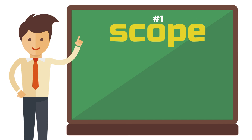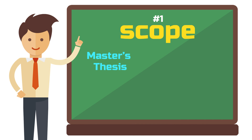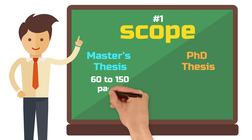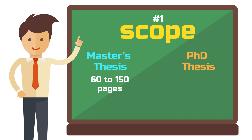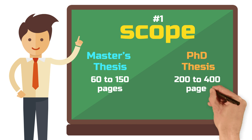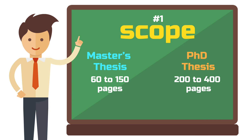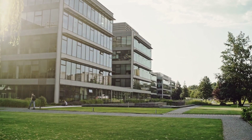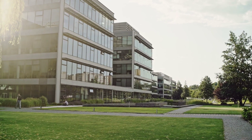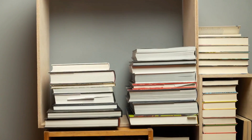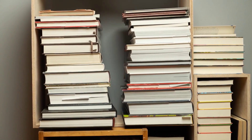Difference number one: the scope of master's and PhD thesis. The most obvious difference lies in the scope of the work. On average, a master's thesis is expected to have 60 to 150 pages of text, excluding bibliography and appendix. A PhD thesis typically ranges from 200 to 400 pages. However, there are always outliers outside of this spectrum. It all depends on the discipline you are in and the requirements of your research institution. What is certain is that a PhD thesis should be more comprehensive than a master's thesis.